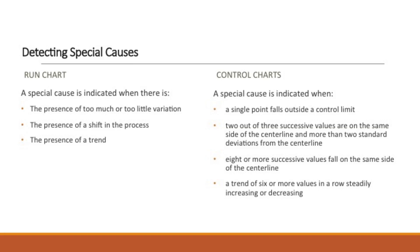The fourth test is a trend of six or more values in a row steadily increasing or decreasing. To summarize, special cause in a run chart is indicated by too much or too little variation, a shift in the process, or a trend. In control charts, special cause is indicated by a single point outside the control limit, two out of three successive values on the same side of the center line and more than two standard deviations from the center line, eight or more successive values on the same side, or a trend of six or more values steadily increasing or decreasing.